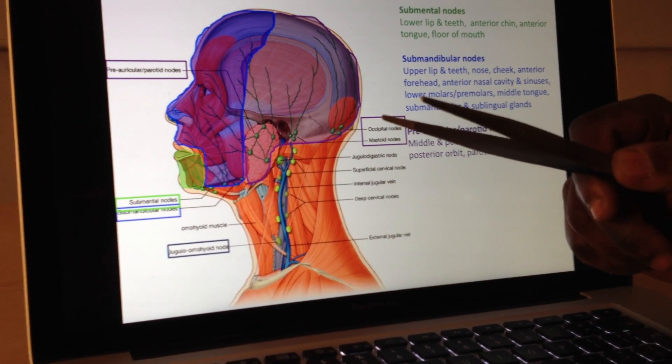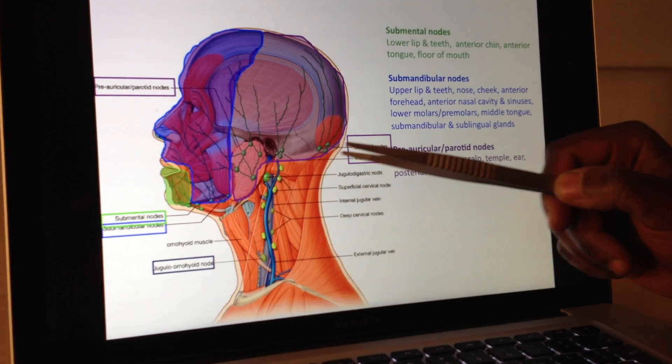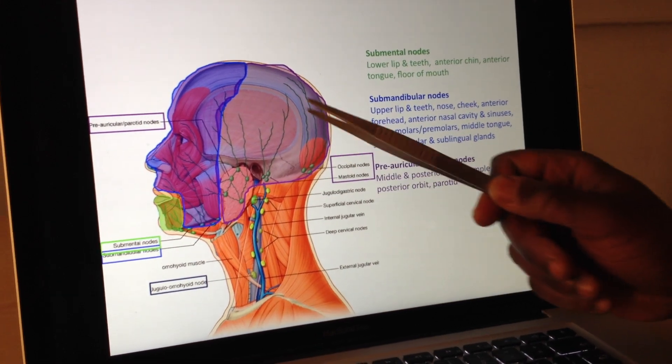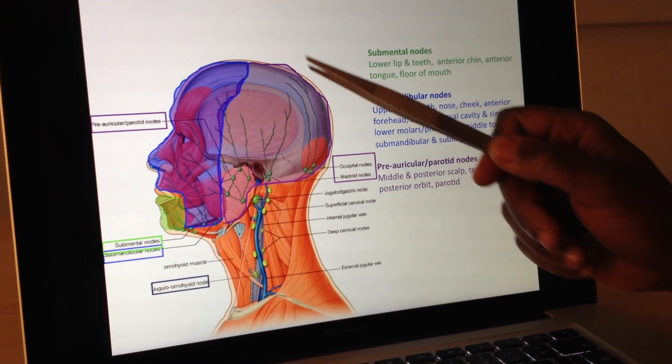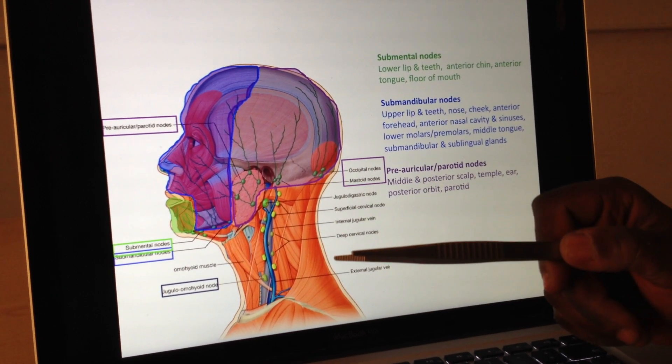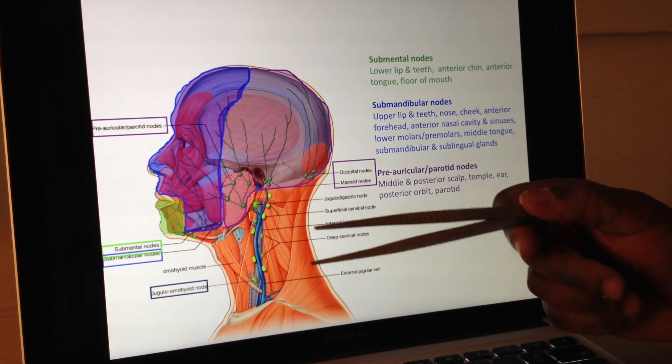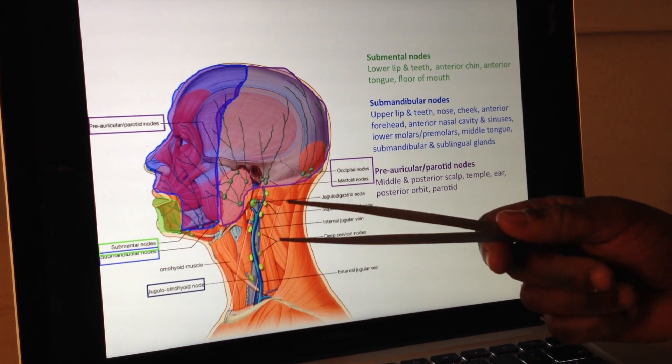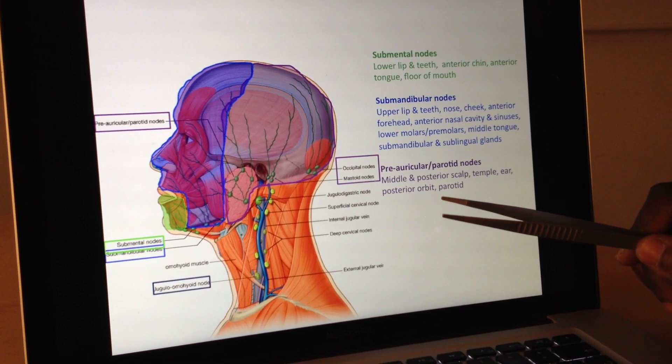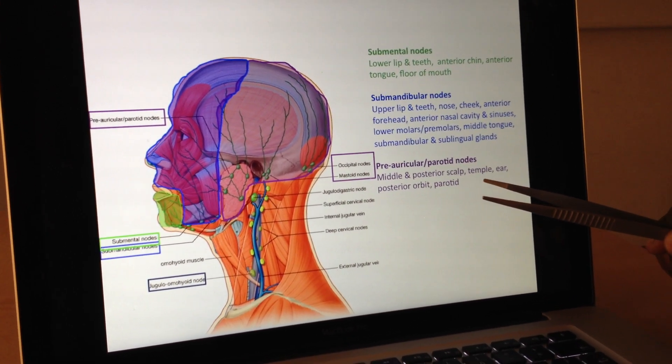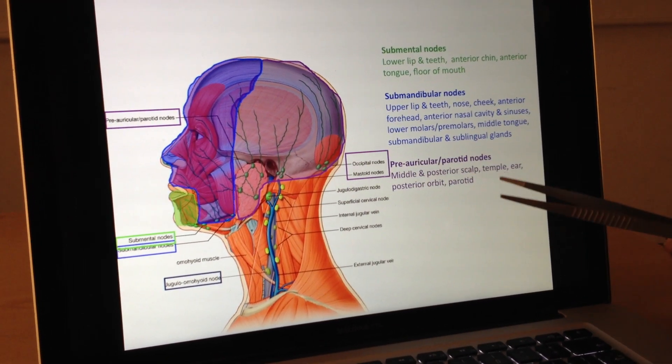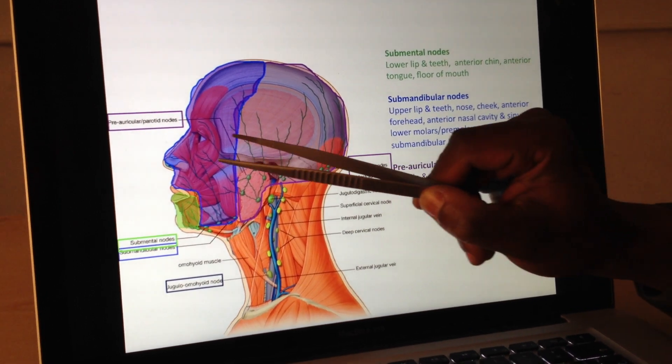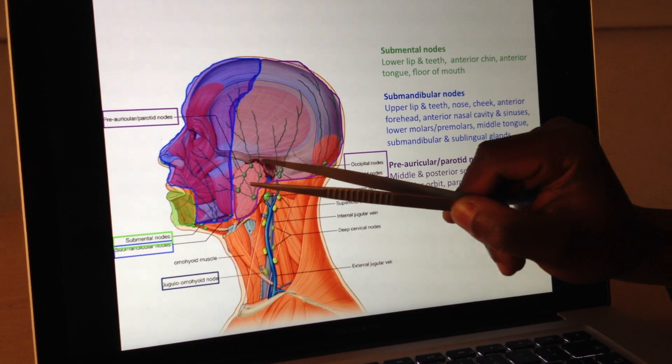If I go on to my next one, even bigger, the occipital and mastoid nodes. So what are they draining? They're going to drain the middle and the posterior of the scalp. Remember scalp, which is that acronym standing for skin, connective tissue, the aponeurosis, and then the loose connective tissue, and then the periosteum. And then it drains the temporal area, the temples, and also the ear, and the posterior of the orbit, so that's quite deep in there now, and the parotid area.